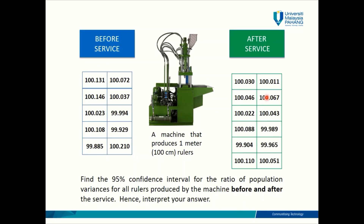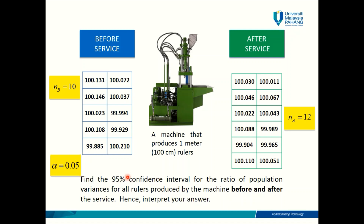Let's look at the problem data again. From this, we can see that the sample size for before service is 10 and the sample size for after service is 12. From the 95% confidence level, we can immediately get that the significance level alpha is 0.05. The sample standard deviation S is not clearly stated in the problem, but you can easily get it from your calculator. Just input the data and make sure you select the correct option to get the sample standard deviation.